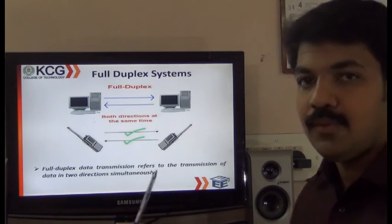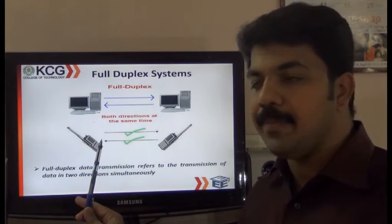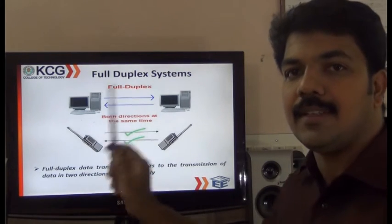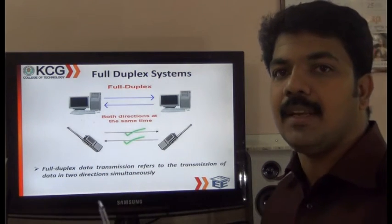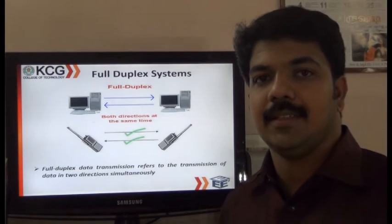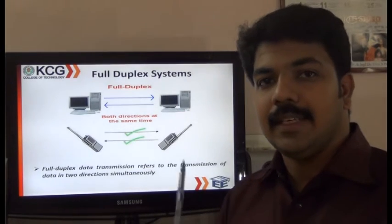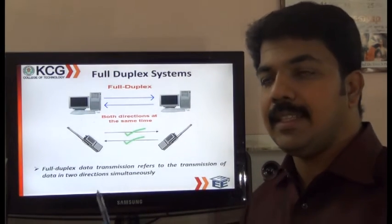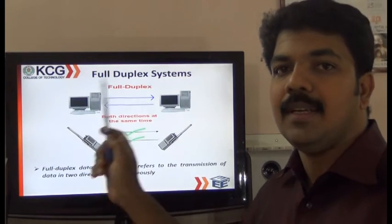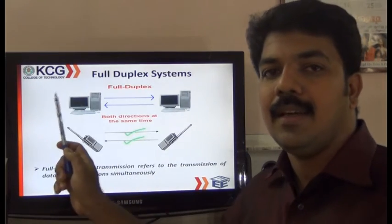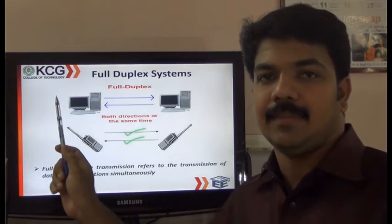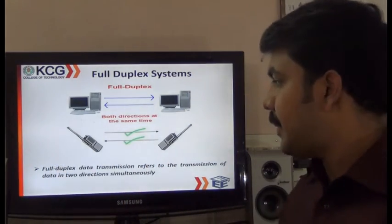In a full duplex system, both forward and reverse communication happen simultaneously. That is, A can send data to B and B can immediately communicate back to A at the same time.